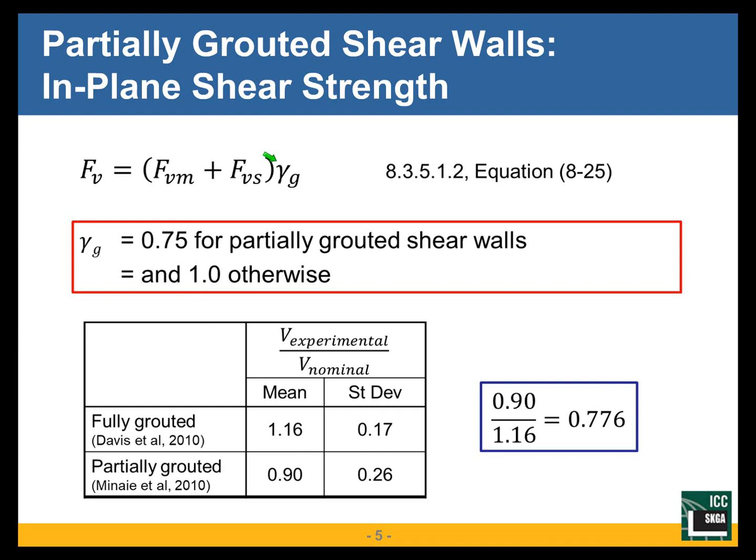There was work done at Washington State under Dave McLean which showed that our strength design provisions for shear in shear walls were the best compared to about seven or eight other codes — Australian, Canadian, New Zealand, and several other methods. So now allowable stress design is very similar to strength design for the shear strength of shear walls. We just write it in terms of stress instead of load, and we use a factor of safety of two.